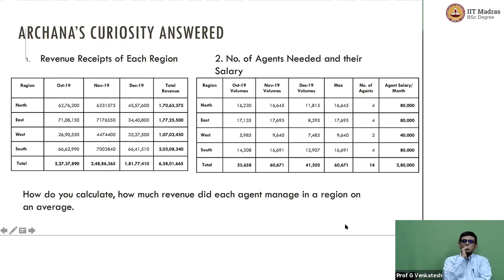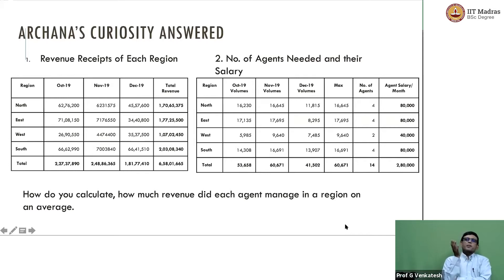You have given us the data and we have seen how to compute from there, potentially the number of agents. We did a very simple thing — in the absence of any rule, we just put a target for each of the agents in terms of sales targets. Based on that, we computed the number of agents: four agents for the north, four agents for the east, two for the west, and four for the south.